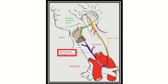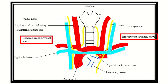One branch is the superior laryngeal nerve and the other is the recurrent laryngeal nerve. In this picture, we can see the trachea and the aorta and other vessels. On the left side is the left recurrent laryngeal nerve, and on the right side is the right recurrent laryngeal nerve.